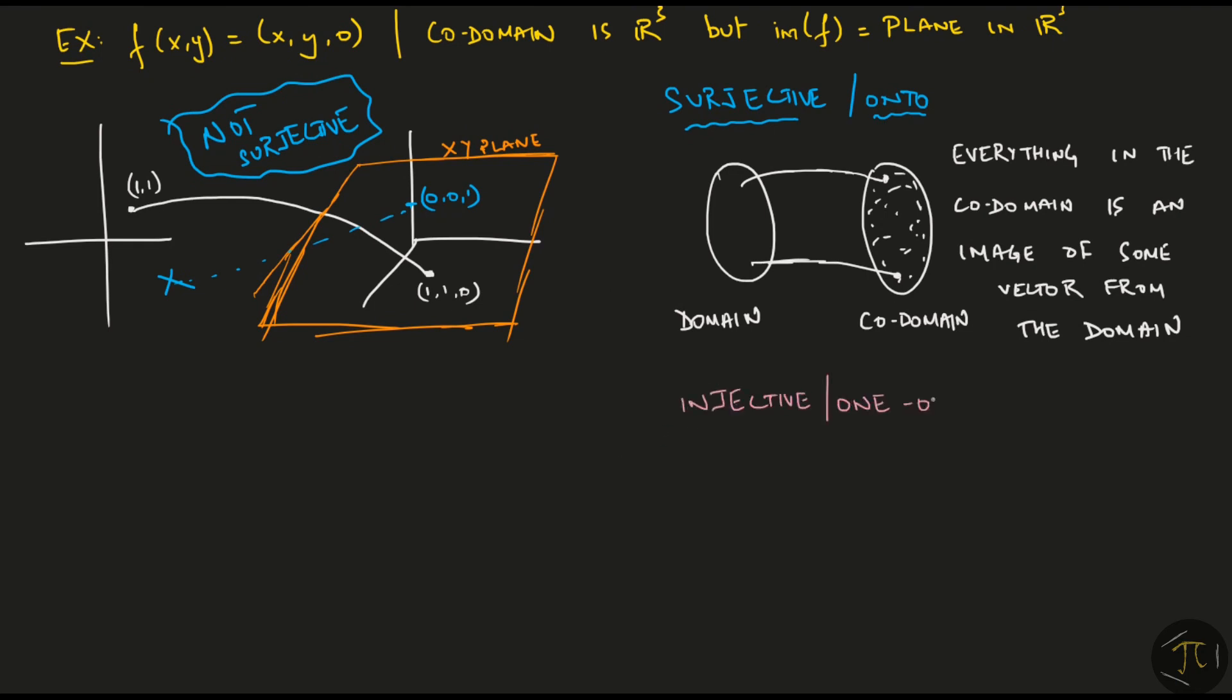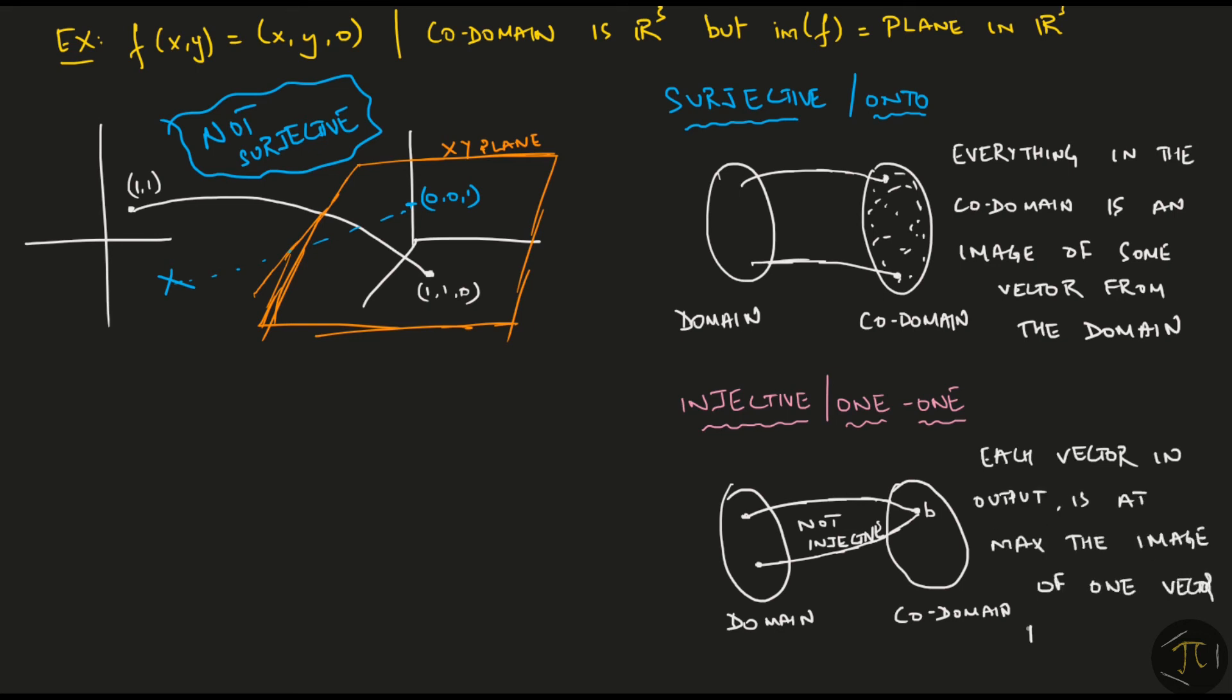Now let's talk about injective or 1-1 functions. If I was looking at some point b in the codomain and found that two different points in the domain led to this point b, this would not be an injective function. A transformation is called injective when each vector in the output space is at max the image of one vector from the input space. Our example here is in fact injective. If a transformation is both surjective and injective, it is called a bijective transformation.